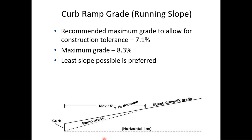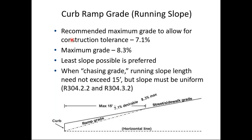Ramp grade: the maximum grade is 1:12 or 8.3%. There's no allowance for construction tolerance, just as with cross slope. Agencies will typically specify something like 6.8 to 7.5% — less than 8.3% — so that when the ramp is built it won't exceed the maximum. When chasing grade, the running slope length does not have to exceed 15 feet.